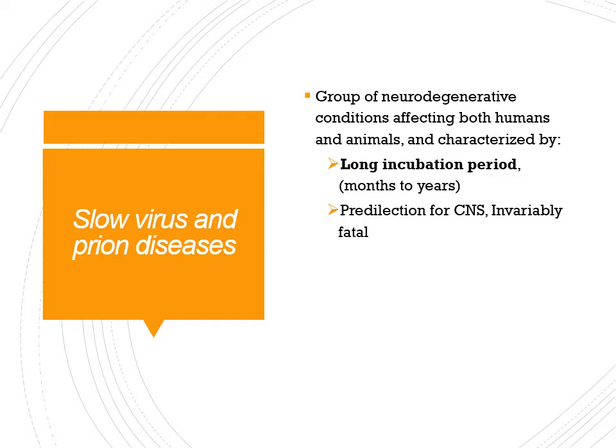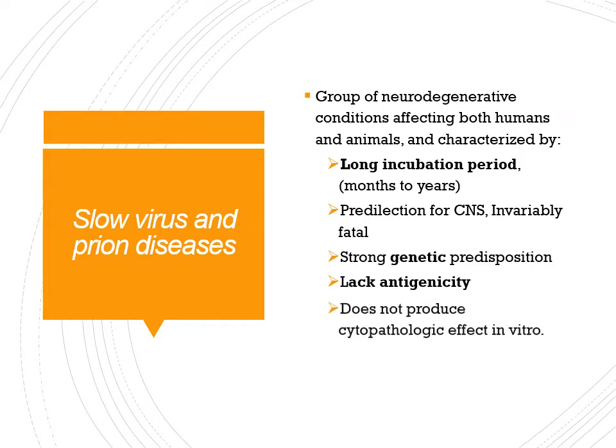These viruses and prions have a predilection for the CNS — they mainly involve the central nervous system — and the disease is invariably fatal. There is a strong genetic predisposition, so it runs in families. They also lack antigenicity: there are no antigens on these proteins, so when infection occurs there is no immune reaction and no cytopathologic effect in vitro.